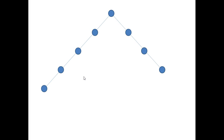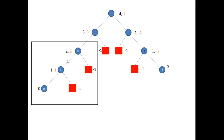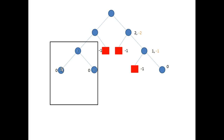Let's look at example three — we'll do this fairly quickly. It looks unbalanced. We need to put in the dummy leaves, identify the heights, and identify the balance factors shown in orange. We'll address the lowest unbalanced node first. We're going to move D down to the dummy, F is going to go up, and H will go up. Height of zero for H and D. Let's see what happens now.